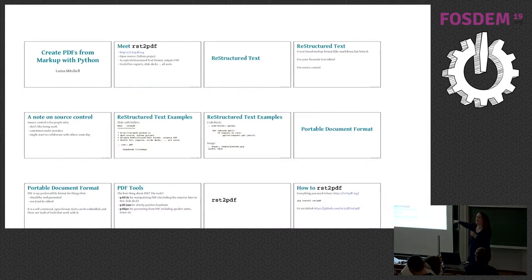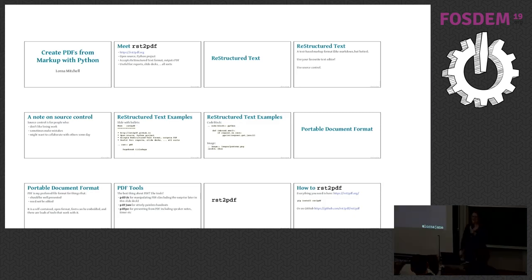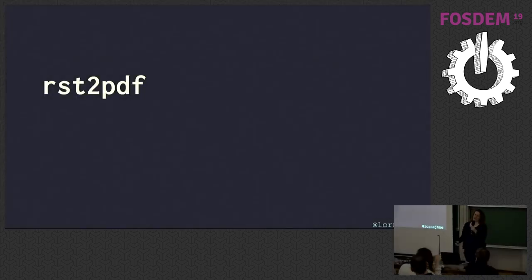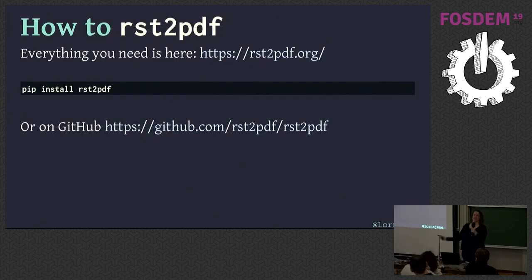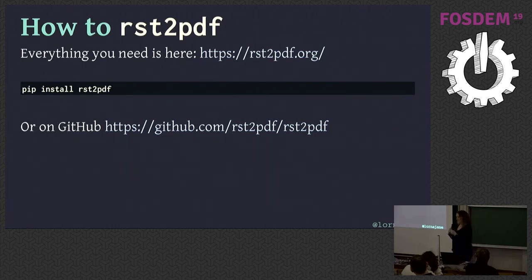PDFtk put this slide here — PDFtk chopped it up and put it here. RST to PDF itself: everything you need is at rst2pdf.org. You're going to install it with pip — pip install rst2pdf. If you want to, you can grab the source. It's a Python project. We also have installation instructions. Python's not my home community and even I can install it from source, so it's pretty easy going.